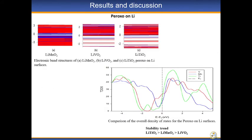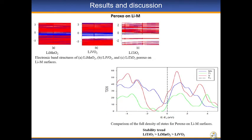For Peroxo on Li-M, all the systems are metallic since there is no gap at Fermi level. The stability trend and catalytic trend remain the same. They are all metallic since there is no gap at Fermi level, and the stability and catalytic reactivity trends remain the same as the first configuration.